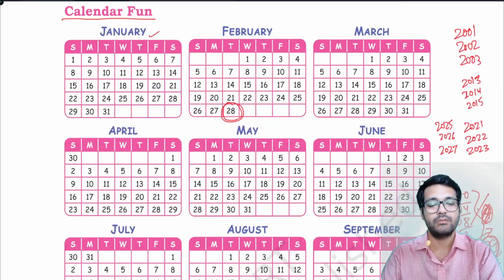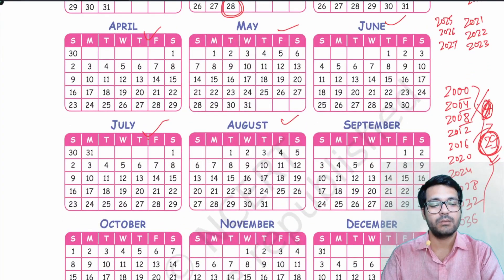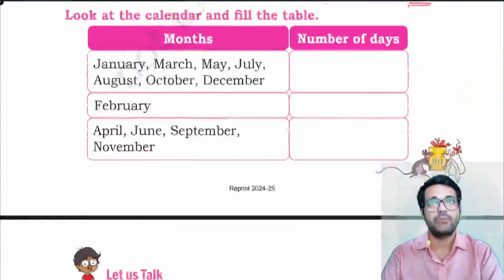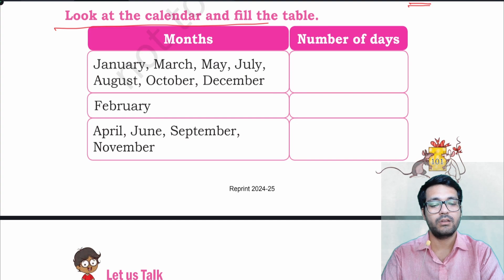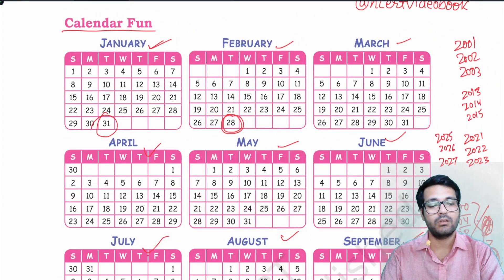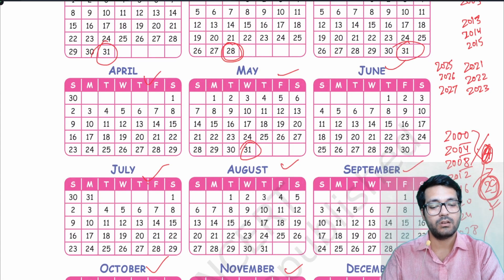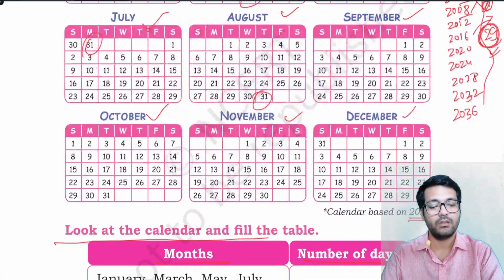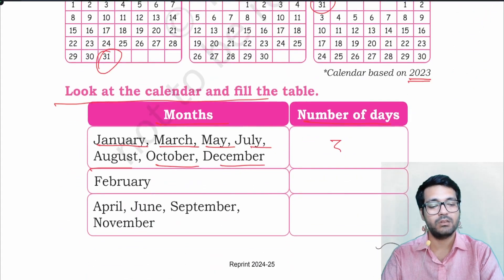This is a calendar showing the months: January, February, March, April, May, June, July, August, September, October, November, and December. Look at the calendar and fill the table. The months January, March, May, July, August, October, and December have 31 days. February of 2023 has 28 days. April, June, September, and November have 30 days.